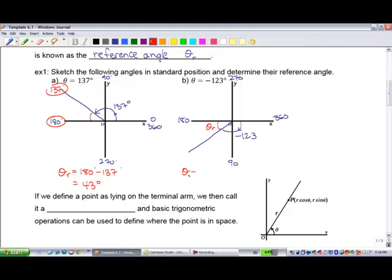The amount between them, theta sub r, is 180 minus 123. It's just an amount. We need to figure out that amount, and that's 57 degrees. The reference angle is always positive.